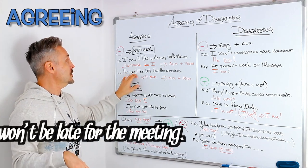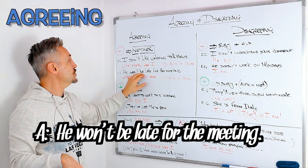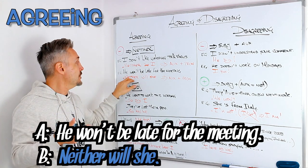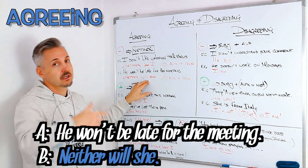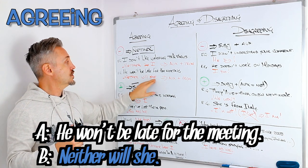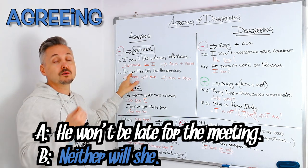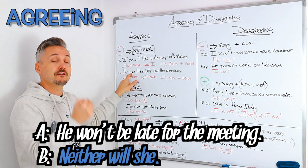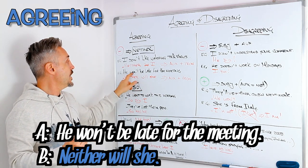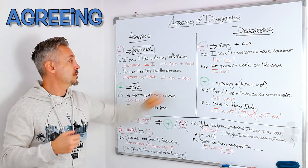Another example: 'He won't be late for the meeting.' So the response would be 'Neither will she.' The auxiliary is 'will' because it's a future sentence. The formula is: neither + will + subject or pronoun — 'neither will she.'